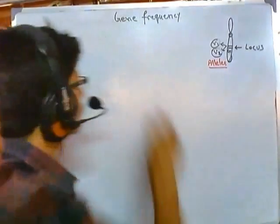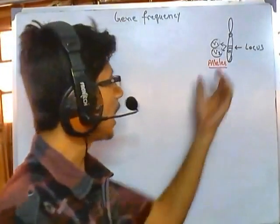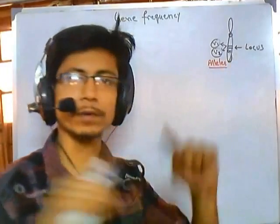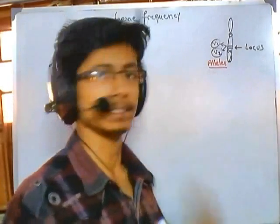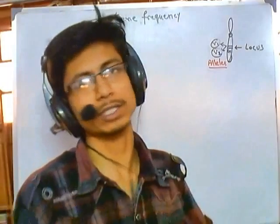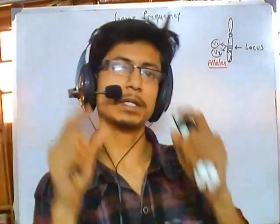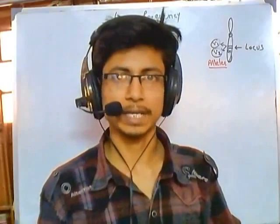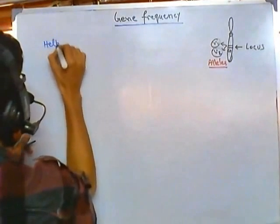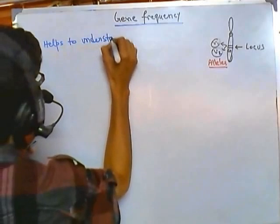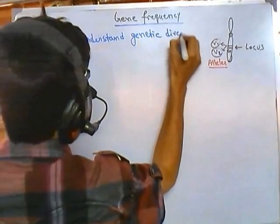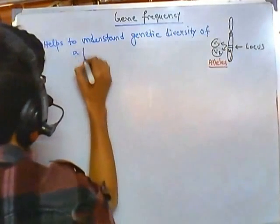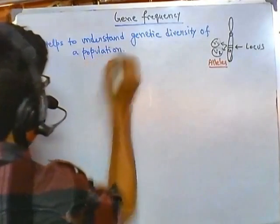So allele, locus, and gene — we know these concepts now. Gene frequency means how many times a particular allele is repeated at a particular locus across a whole population. The frequency of an allele is in turn the frequency for that gene. This concept helps us understand the genetic diversity of a population, which is why it's important.